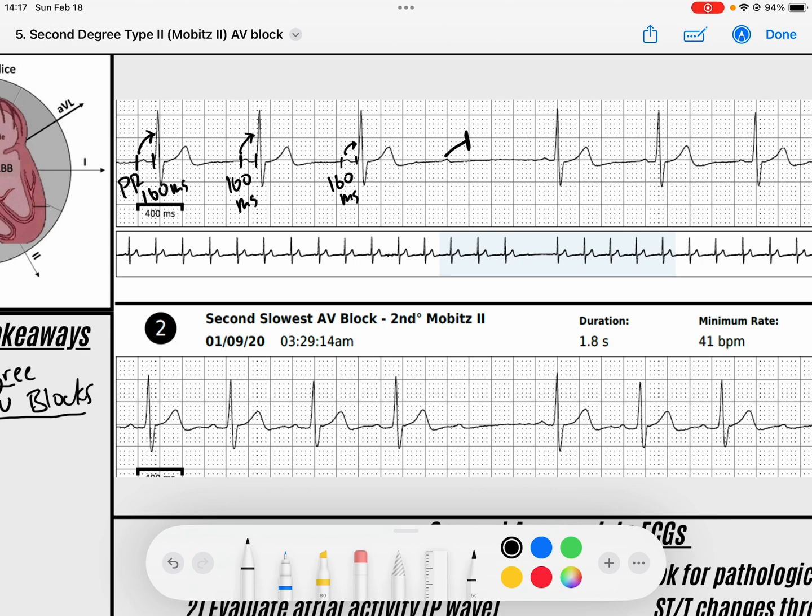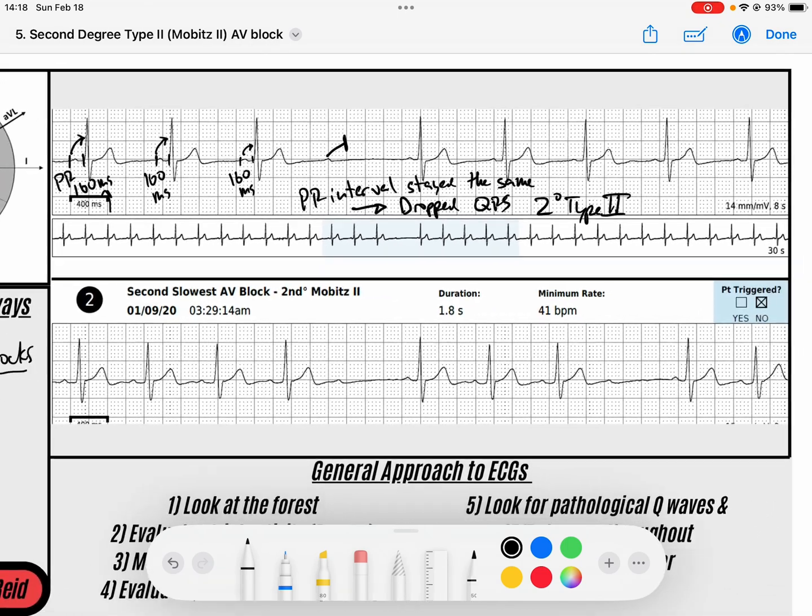That tells me, where did that P wave likely get blocked? Probably not by the AV node itself, because the AV node, which is what is slowing the signal down, is doing it appropriately every single time - 160, 160, 160. But because this one gets blocked, this tells me that the PR interval stayed the same until it dropped a QRS. We know that the only way that would happen is if there was a block at the His bundle, which is a second degree type 2 AV block.